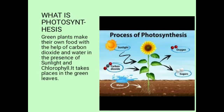What is photosynthesis? Green plants make their own food with the help of carbon dioxide and water, in the presence of sunlight and chlorophyll. It takes place in the green leaves. Kethe joh green plants hote hain, woh apna khana khud banate hain — carbon dioxide (CO2) and water (H2O) ki help se, sunlight aur chlorophyll ki presence mein, green leaves mein.